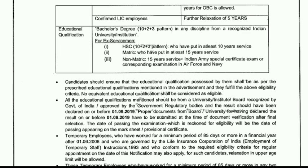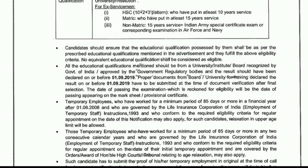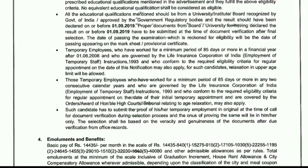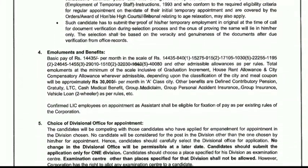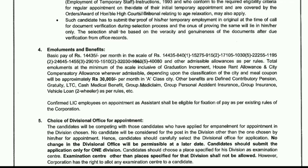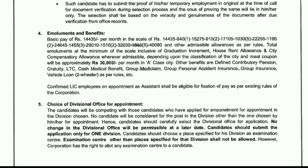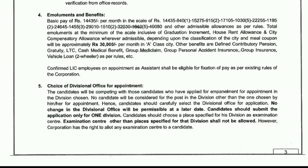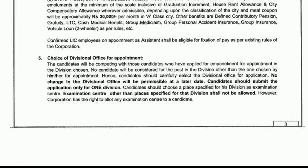You can choose any degree and discipline. The basic pay is in the pay scale of 18,000–35,000, with an income of around 30,000 per month. This is a Class A posting. Benefits include LTC, Medical Benefit, Accidental Insurance, and Group Insurance, designed for the Divisional Office selection.